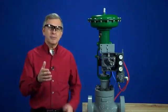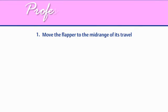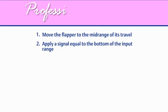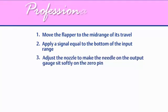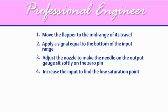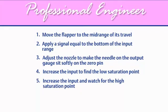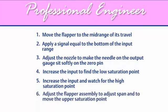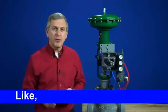So, we can calibrate the 3582 positioner in just six easy steps. Step one, move the flapper to the mid-range of its travel. Step two, apply a signal equal to the bottom of the input range. Step three, adjust the nozzle to make the needle on the output gauge sit softly on the zero pin. Step four is to increase the input to find the low saturation point. The output needle should move before the input gets to three and a half. Step five, increase the input and watch for the high saturation point. Step six, adjust the flapper assembly to adjust span and to move the upper saturation point. Then re-zero and check it again. Thanks for watching.